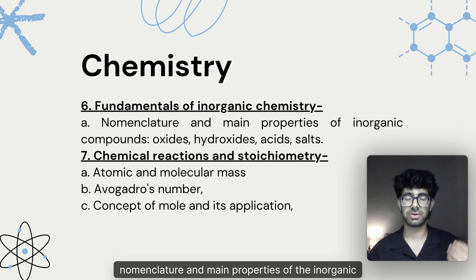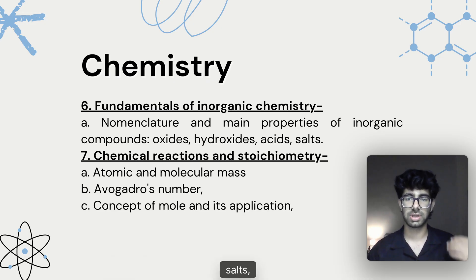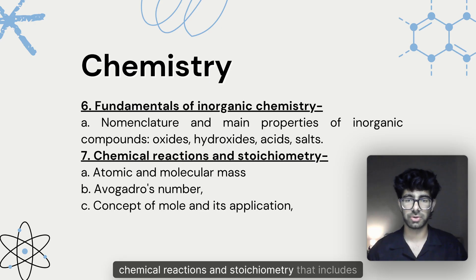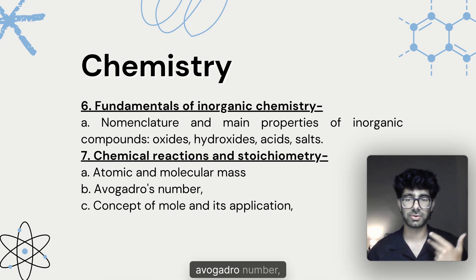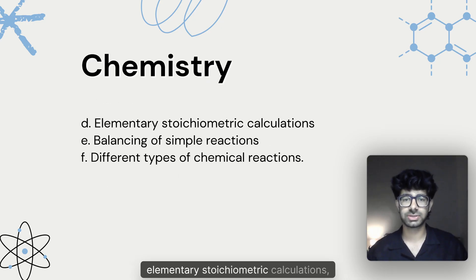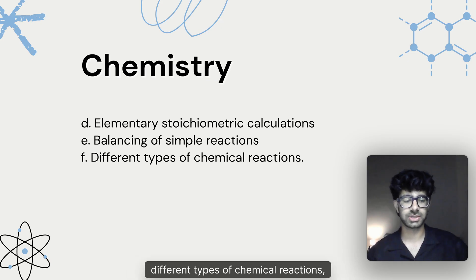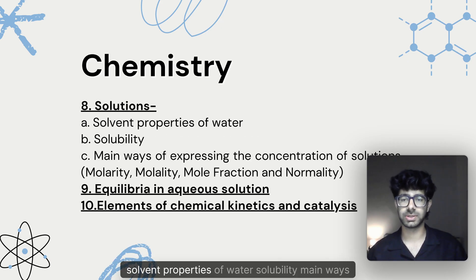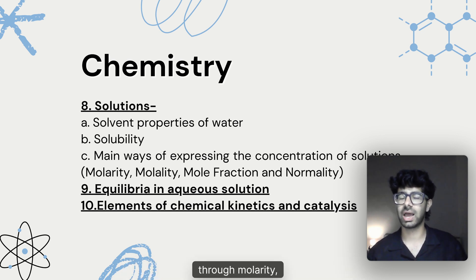Fundamentals of inorganic chemistry includes nomenclature and main properties of inorganic compounds such as oxides, hydroxides, acids, and salts. Chemical reactions and stoichiometry covers atomic and molecular mass, Avogadro's number, the concept of the mole and its applications, elementary stoichiometric calculations, balancing of simple reactions, and different types of chemical reactions.